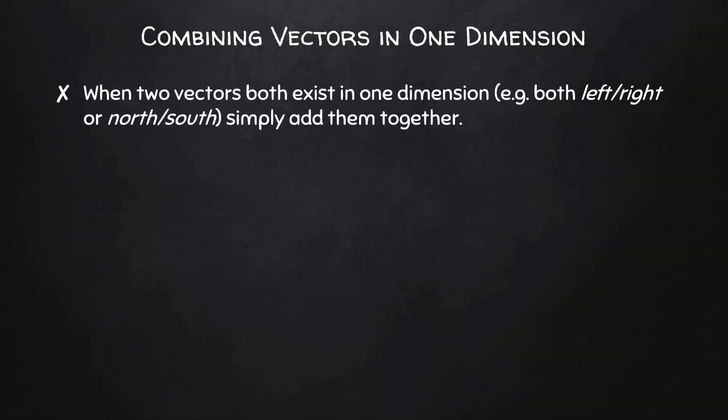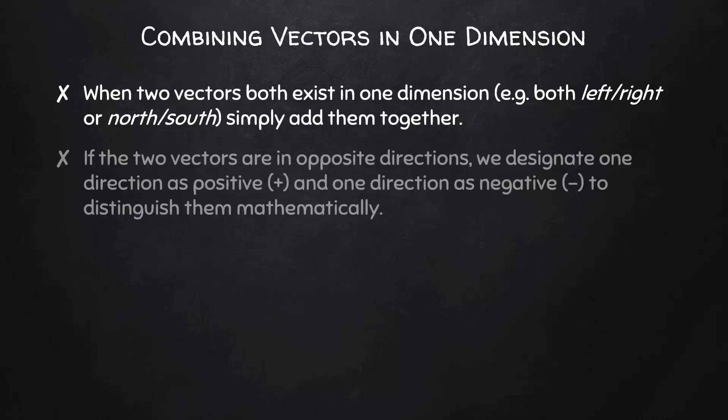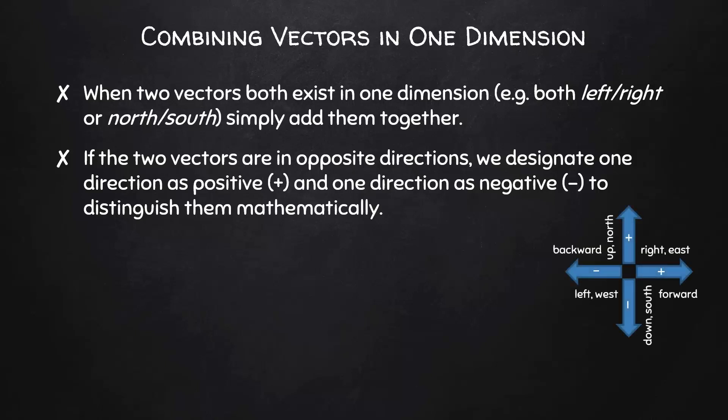When two vectors both exist in the same dimension, for instance both left or right, or both north or south, we simply add them together. It is important to note that if the two vectors are in opposite directions, we designate one direction as positive and one direction as negative to distinguish them mathematically. Keep in mind that no direction is intrinsically positive or negative, but generally we'll follow the convention shown on the right.